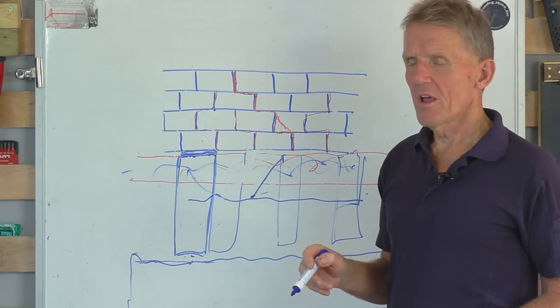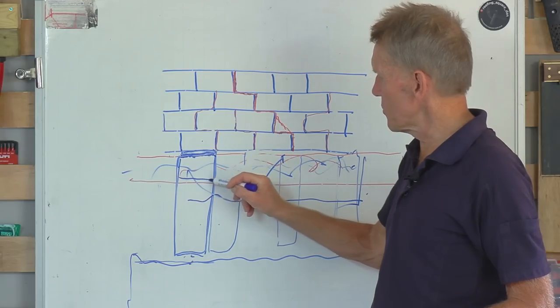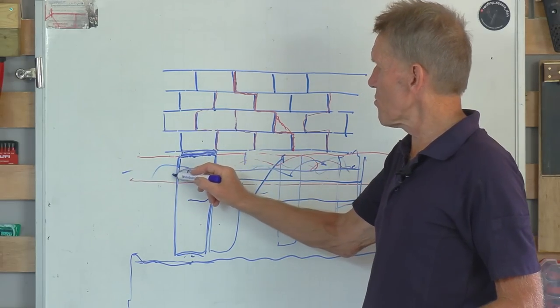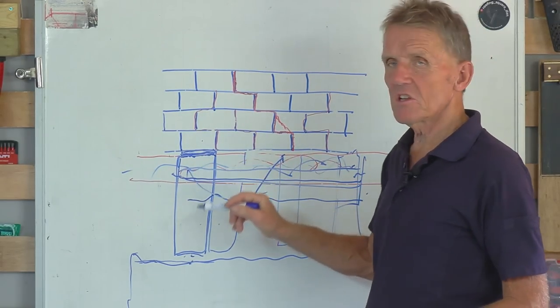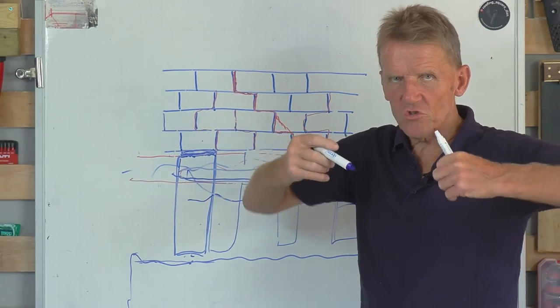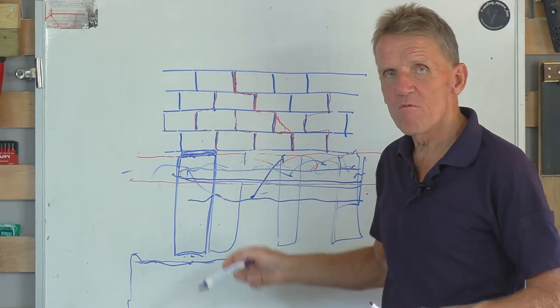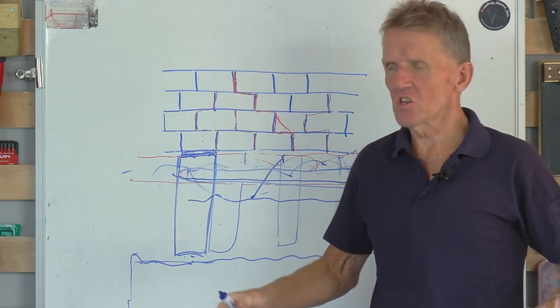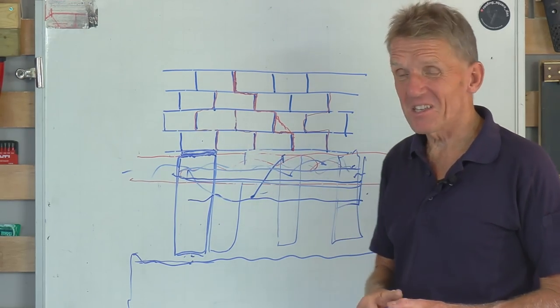Now, you could put reinforcing bar in there, and that's what they do in America. They dig shallow, but they use lots of reinforcing bar across the foundation, and they don't dig so deep, but they make sure it's a strong thing. And so if the ground starts to move beneath it, there's a certain degree of strength in the foundation, so long as it's supported in a couple of places.